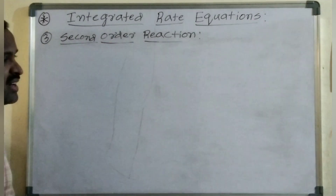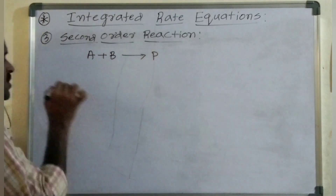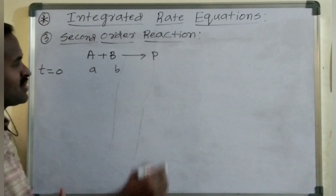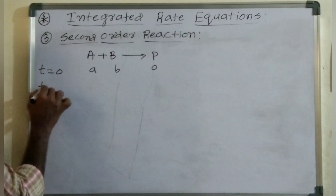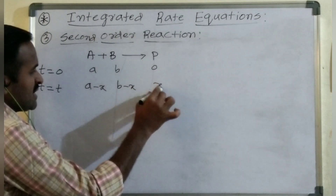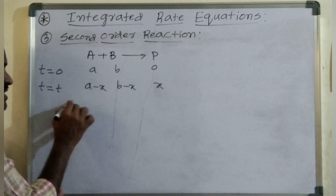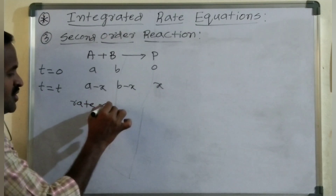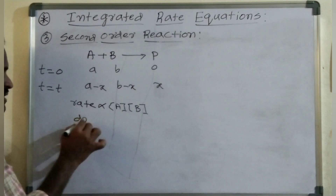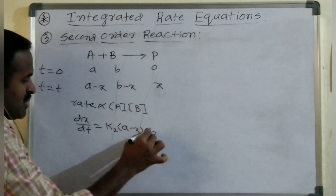When two different reactants are involved in the second order reaction, consider the reaction A plus B gives products. Initial concentration of A is 'a' and initial concentration of B is 'b', with product at zero. At a particular time T, the leftover concentrations are (A minus X) and (B minus X), and product is X. According to the law of mass action, rate equals K2·(A minus X)·(B minus X).